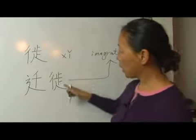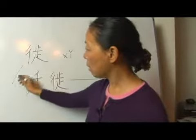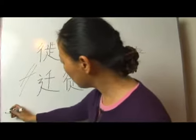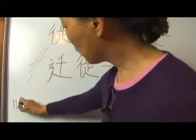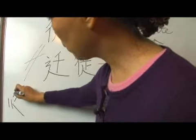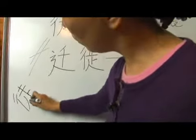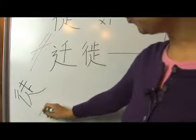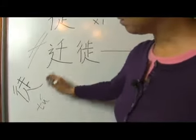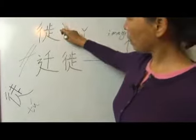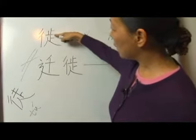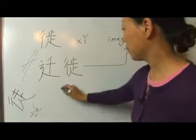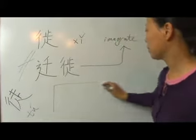Just pay attention — this xǐ is different from the word read tǔ. This tǔ means last labour. They have a difference in this part; they are different. Thank you.